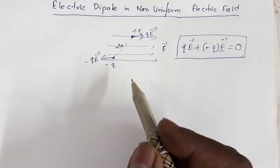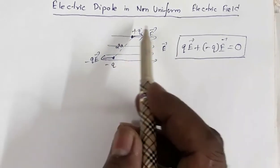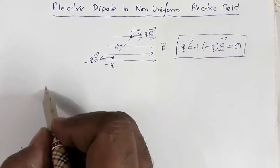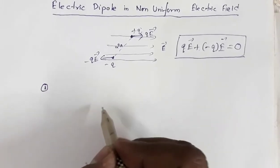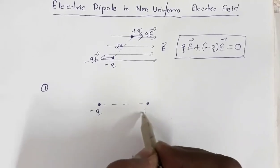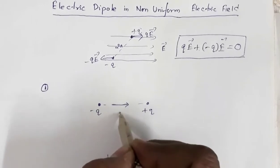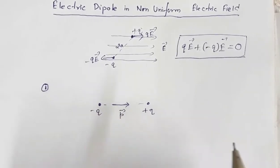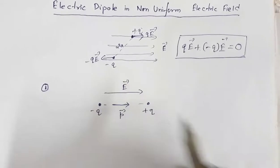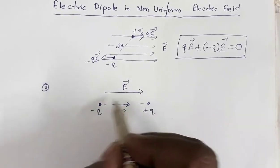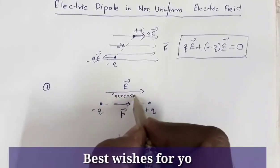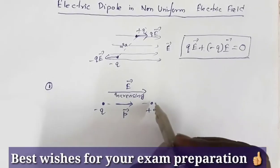Let us consider two cases. Case one: we have a dipole with a negative charge and a positive charge. The dipole moment is directed from the negative charge to the positive charge. Suppose the external electric field is in the same direction as the dipole moment, and it is increasing in this direction.